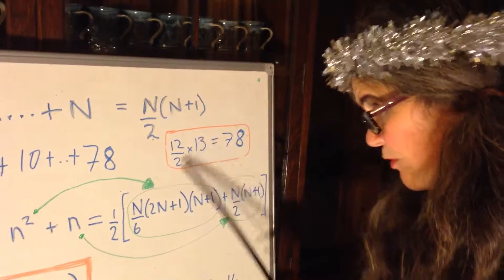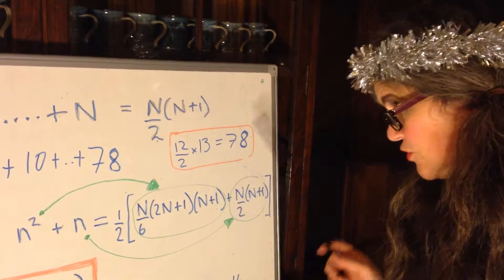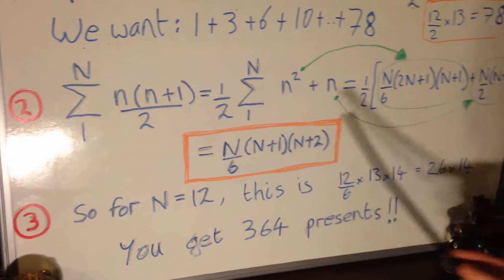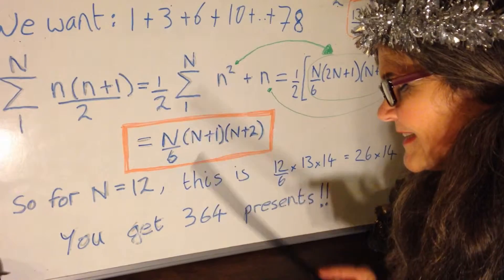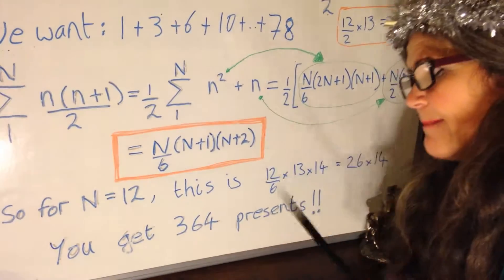Seventy-eight comes from this formula, twelve times thirteen over two equals seventy-eight. So, skipping over this little tricky bit, we get the formula coming out to n over six times n plus one times n plus two.